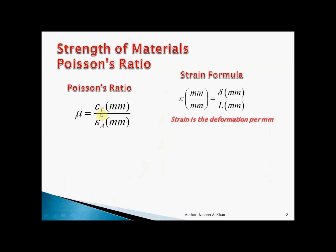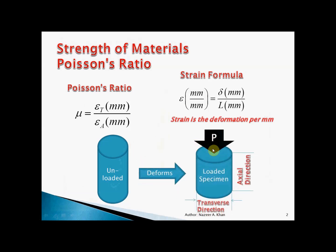Let's examine what transverse (T) and actual (A) really mean. When a cylinder is unloaded and then loaded, it deforms — the length becomes shorter but the diameter becomes larger. The direction in which the load is applied is the actual direction; perpendicular to that is the transverse direction. For a cylinder, the transverse length is the diameter, and the actual length is the original length.